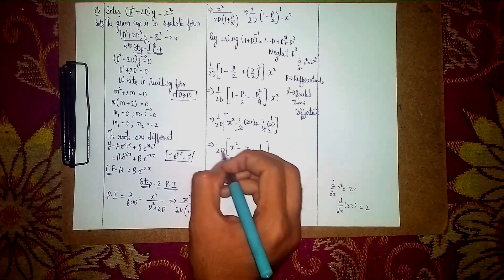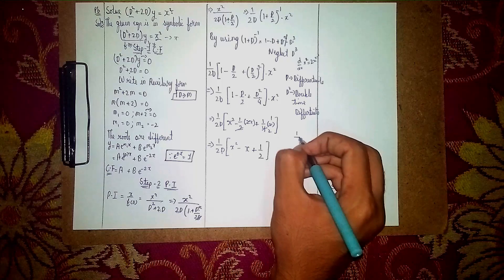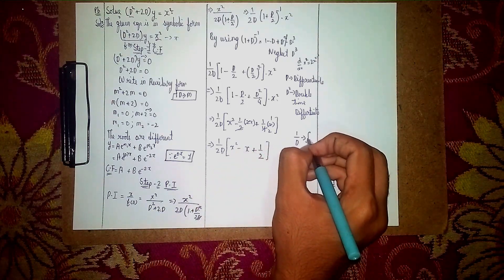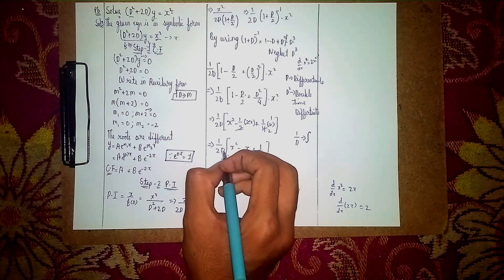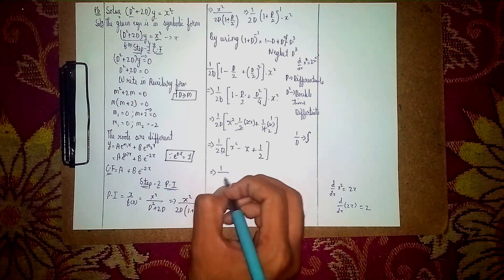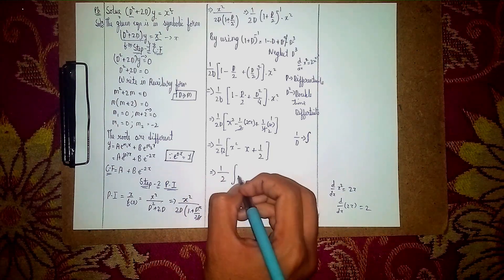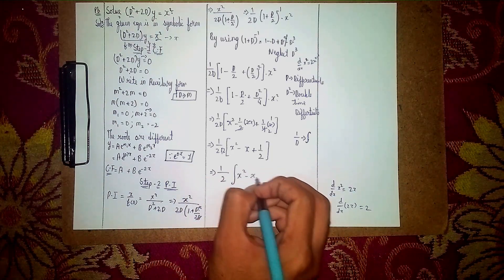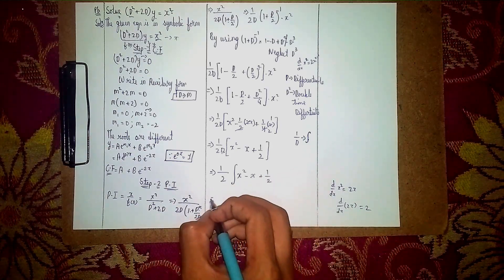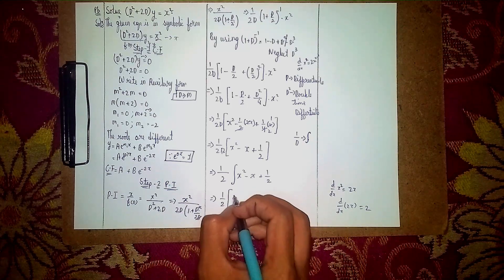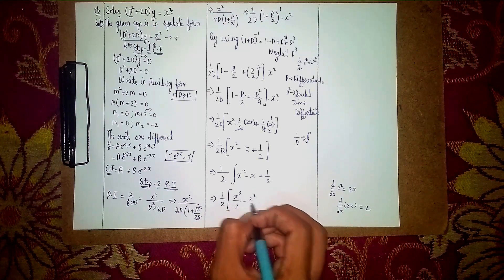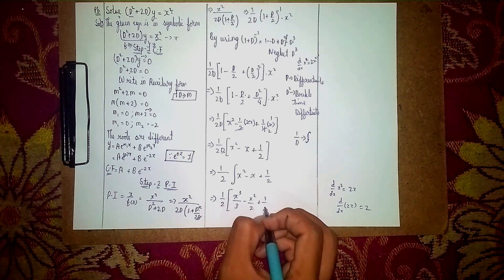Now 1/d means integration. So apply (1/(2D)) by integrating: (1/2)·∫(x² − x + 1/2)dx. Integrating: (1/2)·[x³/3 − x²/2 + x/2].